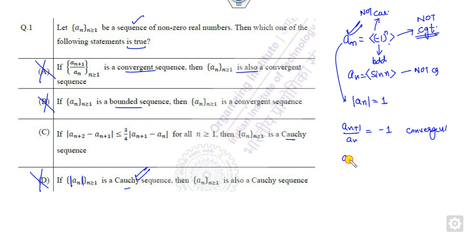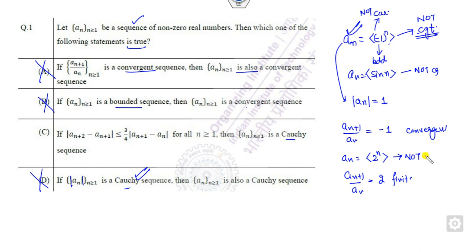Consider another example: 2^n. Then a_{n+1}/a_n = 2, which is finite and convergent, but 2^n itself is not convergent because its limit goes to infinity. So all other options are cancelled out, meaning the remaining option is the correct one.